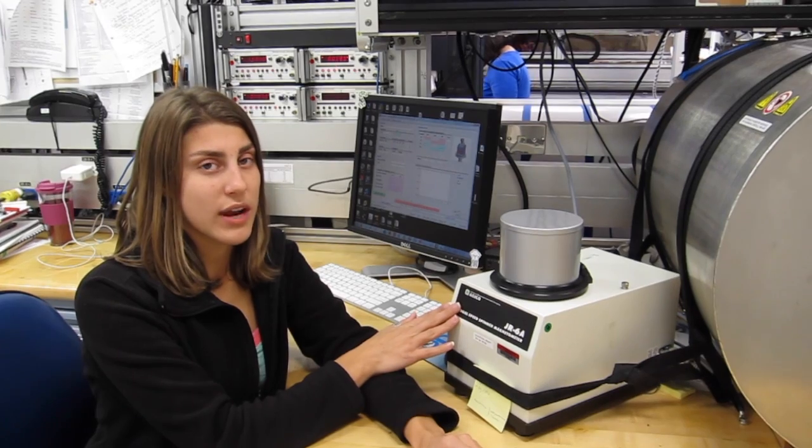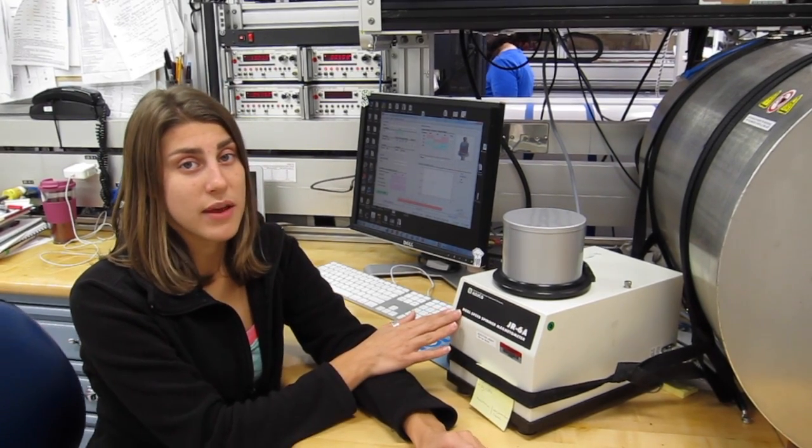We put it in the degausser, which demagnetizes it. We demagnetize it step by step, and then we measure it to see what happens when we remove some of the magnetization.